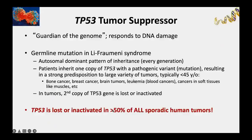TP53 is lost or inactivated in more than 50% of all sporadic common human tumors, and it's likely much higher than that because we're discovering different ways that tumor suppressor genes can be inactivated.